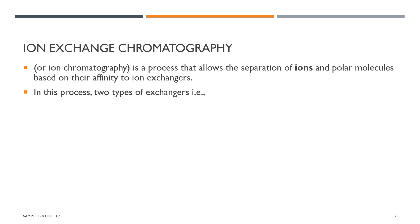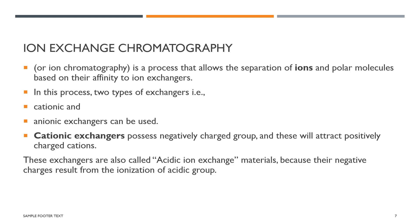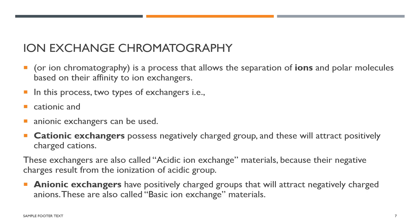In ion exchange chromatography, two types of exchangers are used: cationic and anionic. The cationic exchanger possesses negatively charged groups that attract positively charged cations. These are also called acidic ion exchangers because their negative charges result from the ionization of acidic groups. The anionic exchanger has positively charged groups that attract negatively charged anions, and these are called basic ionic exchangers.